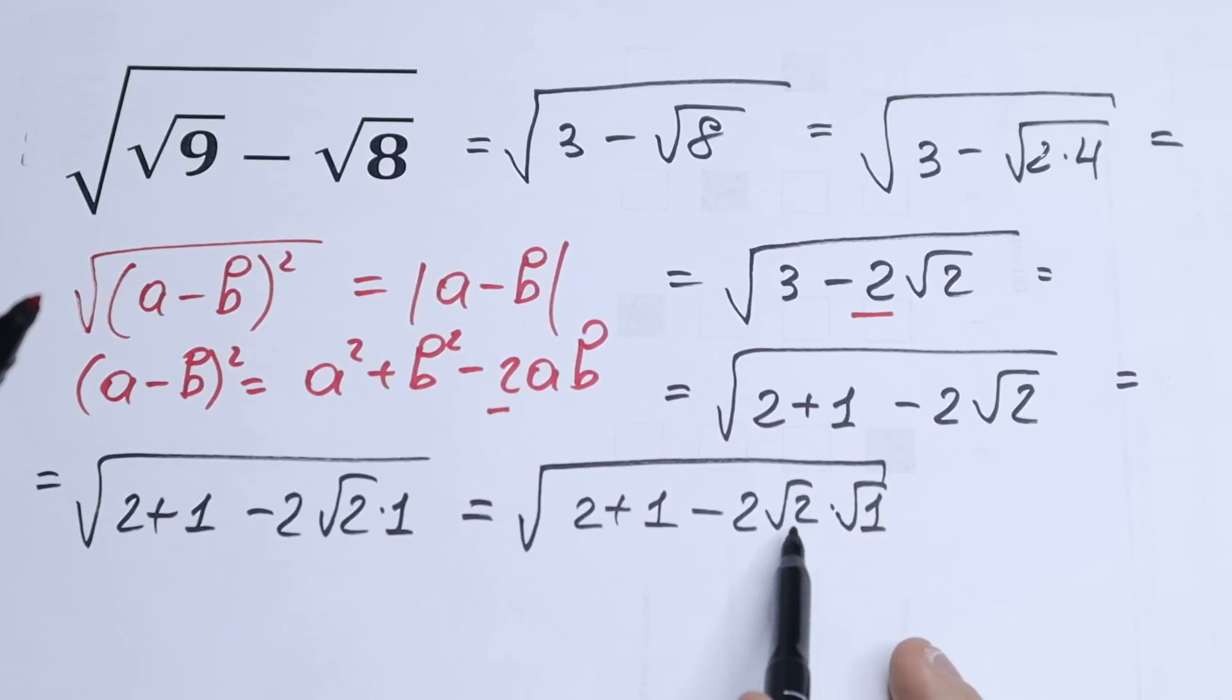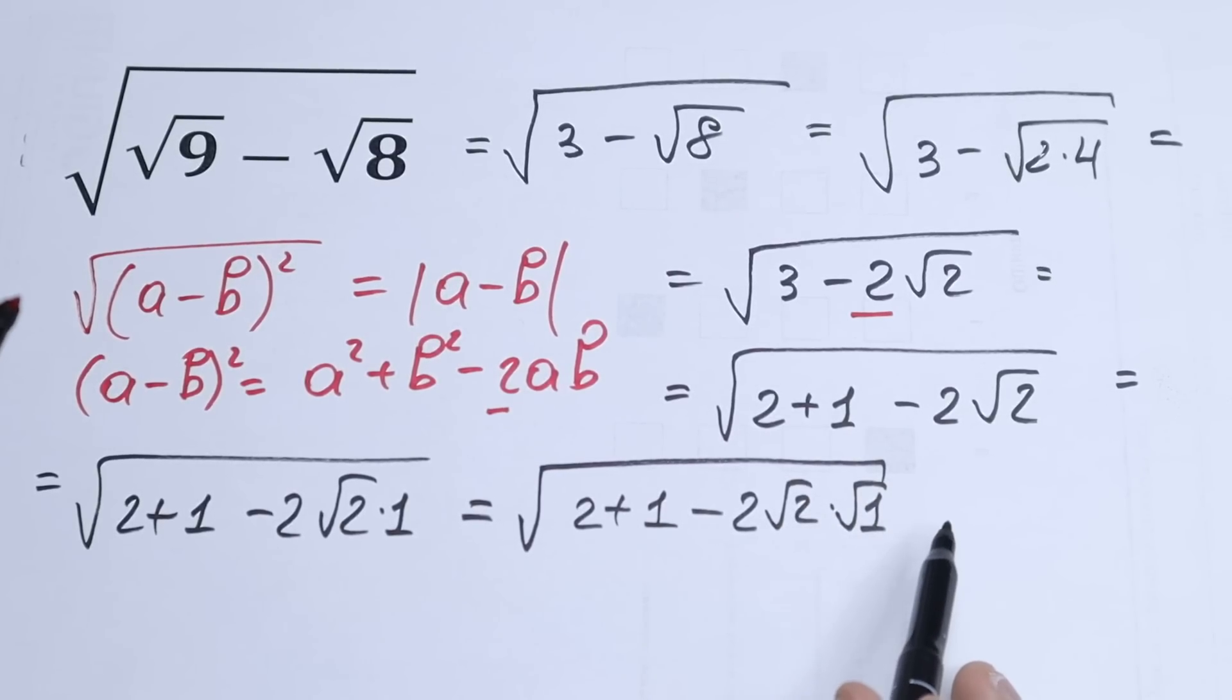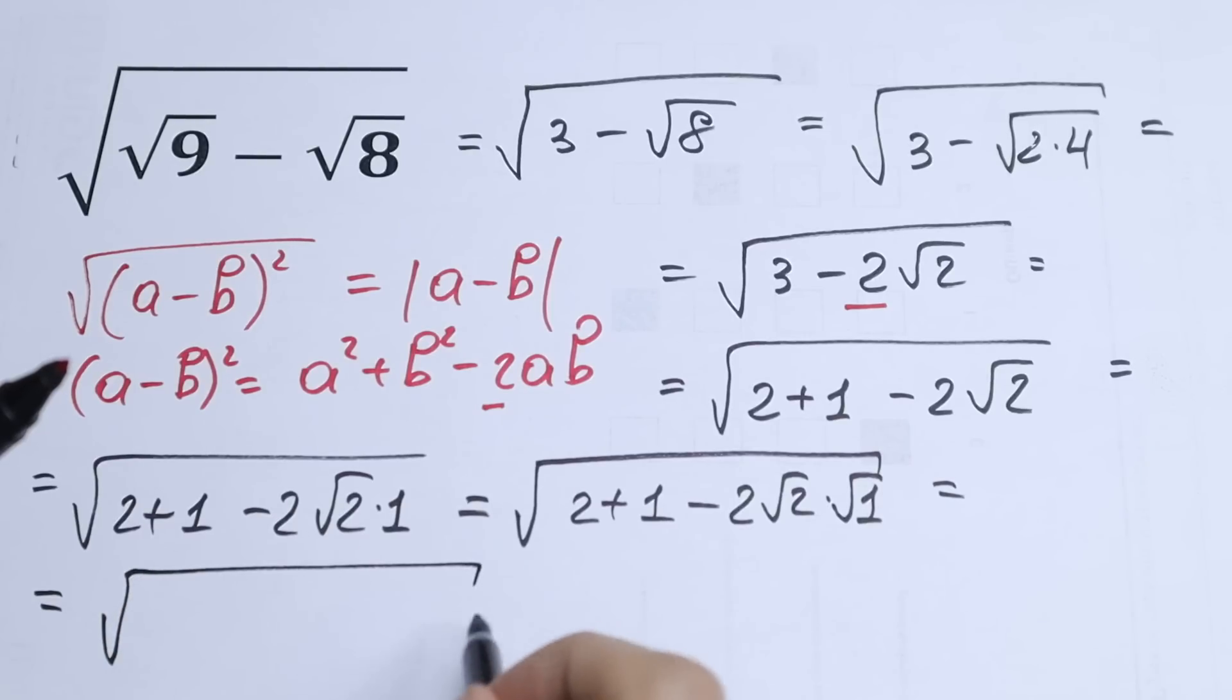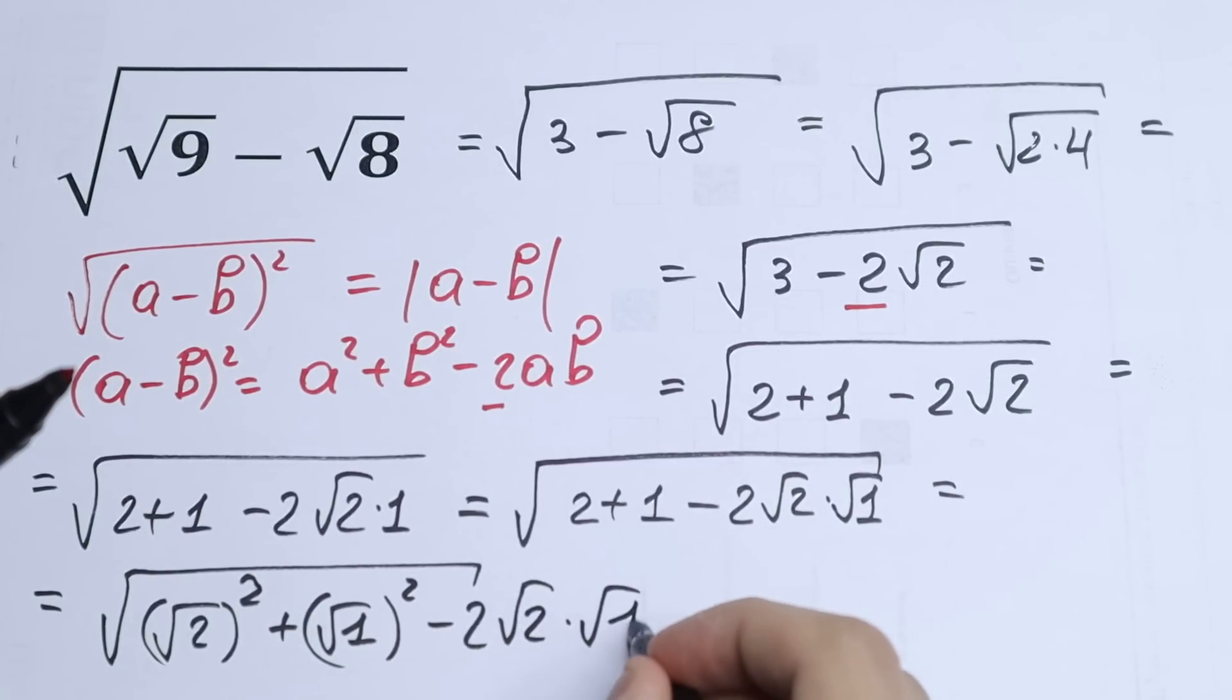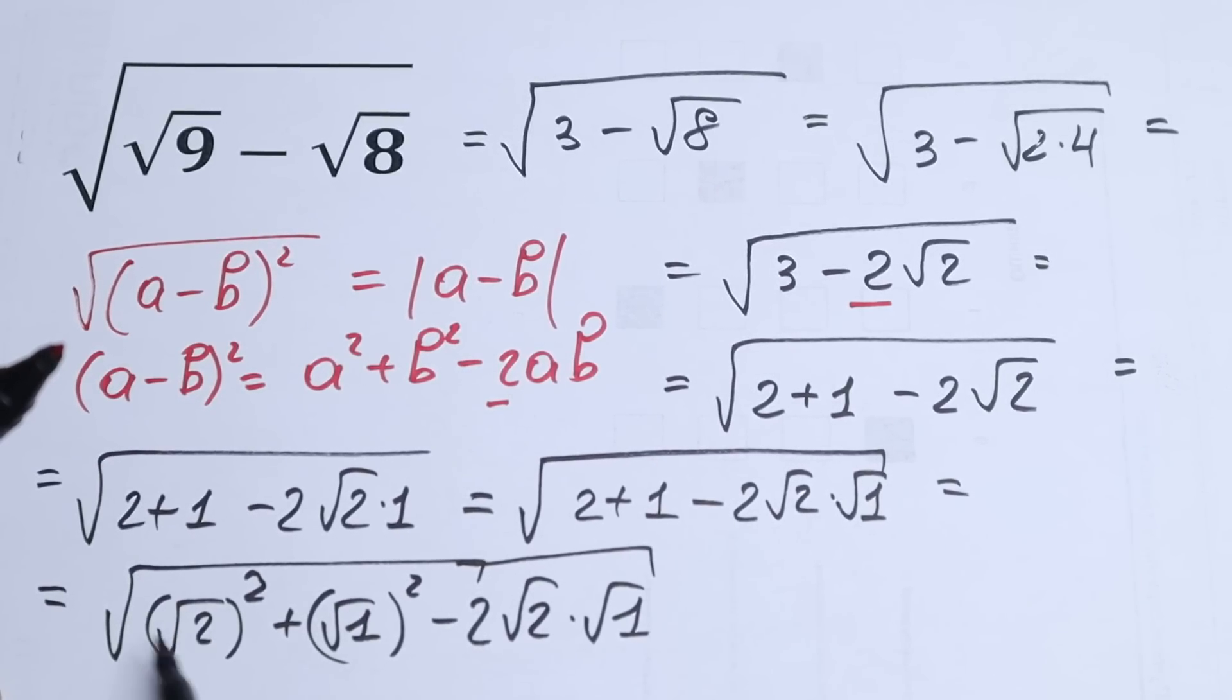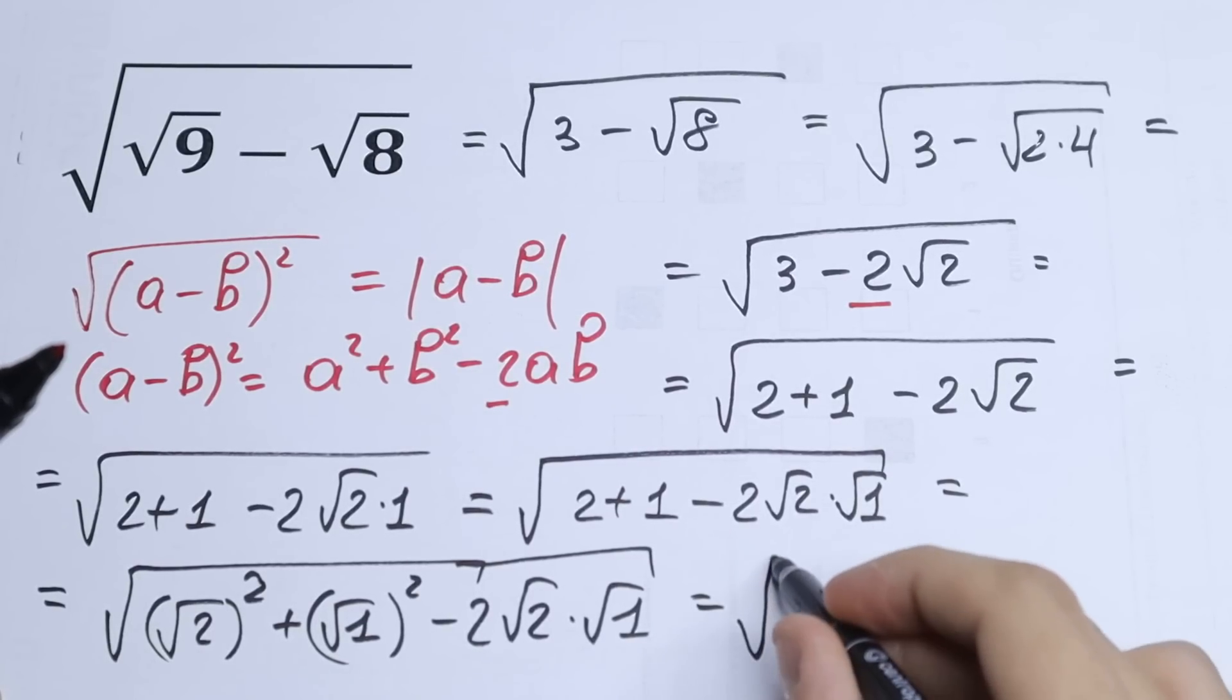But can we be able to create a and b right here? Something like that in that situation. √(a² + b² - 2ab). Of course we can, because we can write these 2 as (√2)². Plus (√1)². And -2√2·√1. Nothing hard, just write this using square sign. It will be equal to 2, of course, and it will be equal to 1.